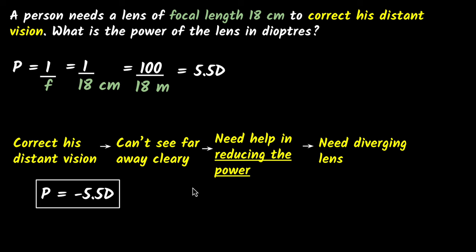Similarly, if the question was to correct his near vision, then it would mean he can't see things close by clearly. If you can't see things close by clearly, that means you need help in increasing the power. In that case, you would have required a converging lens. That's how you can logically figure out whether you need a converging or a diverging lens.